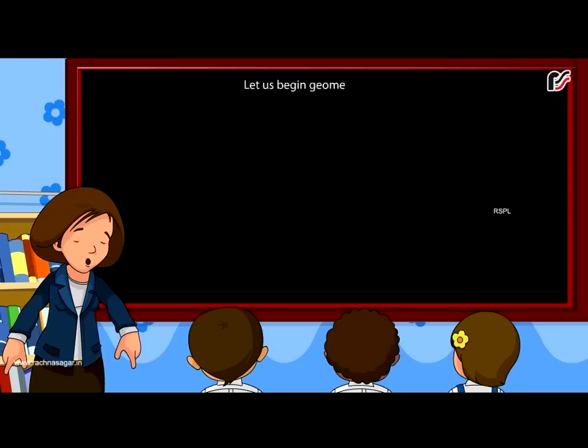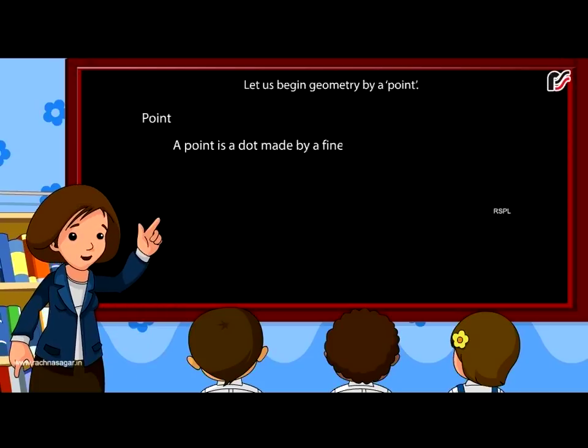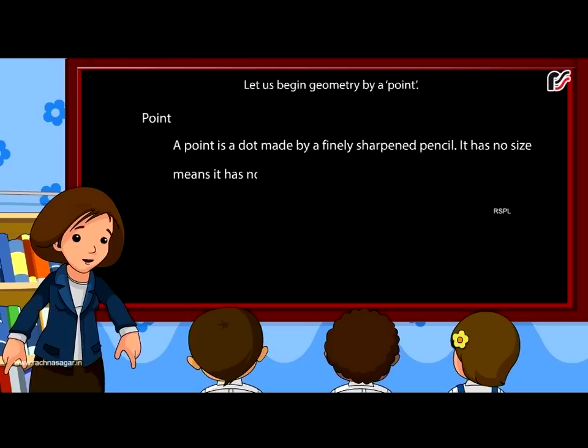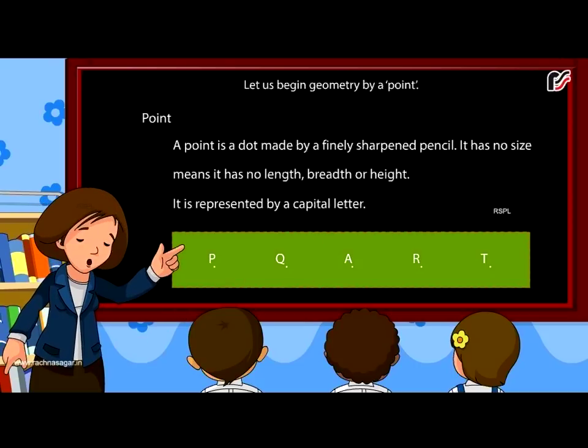Let us begin geometry with a point. A point is a dot made by a finely sharpened pencil. It has no size, means it has no length, breadth or height. It is represented by a capital letter: Point P, point Q, point A, point R, point T.